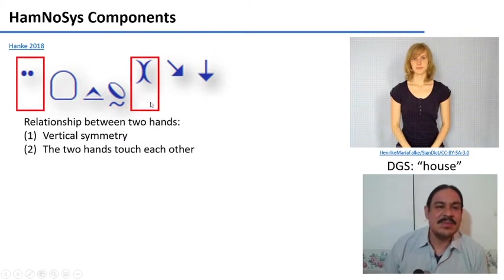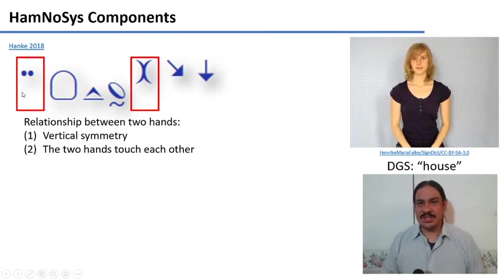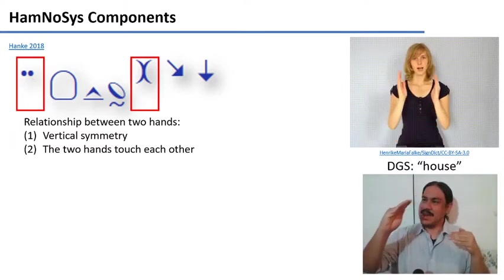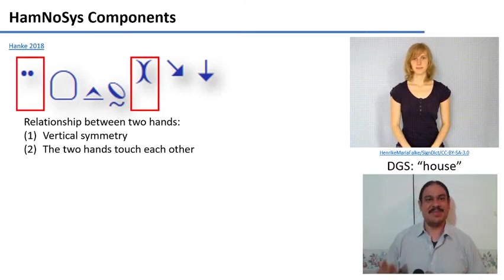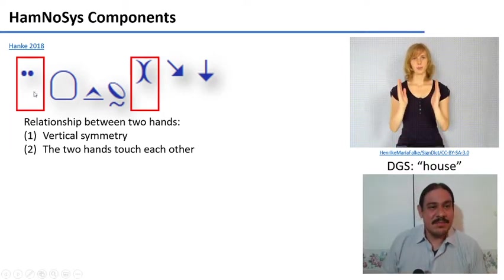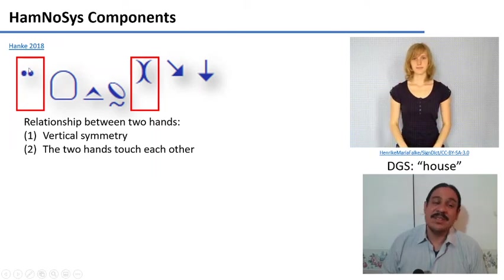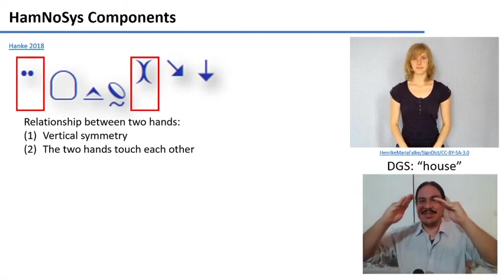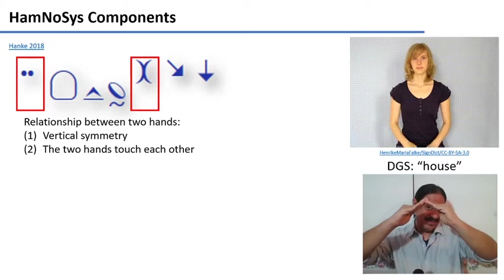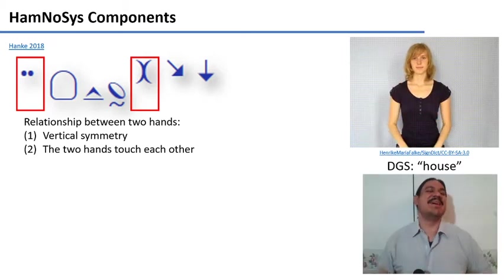These symbols tell you the relationship between the hands. This one tells you that the sign is symmetric vertically. As you can see, what this hand is doing, the other hand is doing as well. It is vertically symmetrical. I apologize. And the two hands are touching each other as they start. So they start together. There we go. And then they separate.